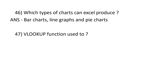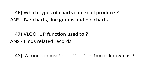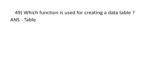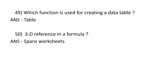What types of charts can Excel produce? Bar charts, line graphs, and pie charts. The VLOOKUP function is used to find related records. A function inside another function is known as a nested function. Which function is used for creating a data table? Table. A 3D reference in a formula refers to 5 worksheets.